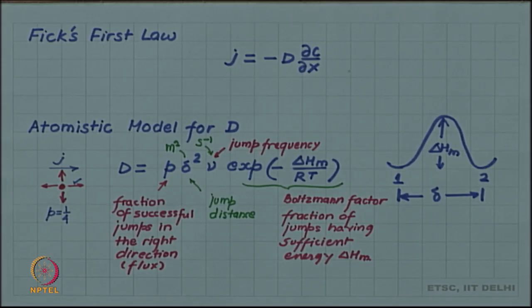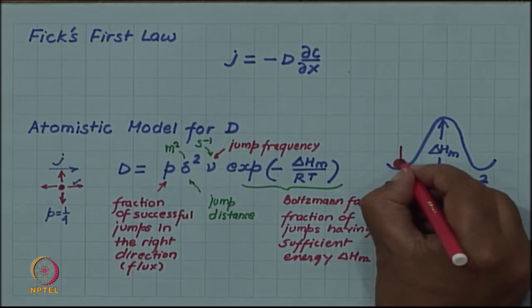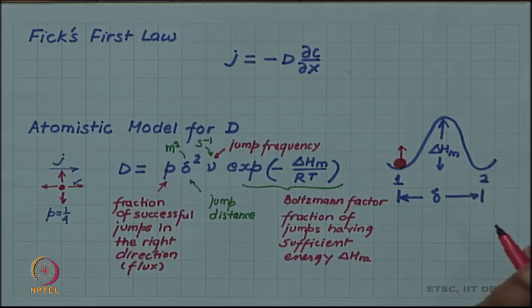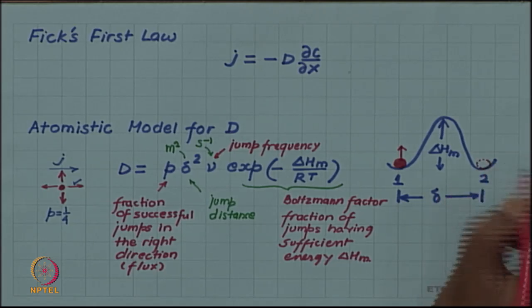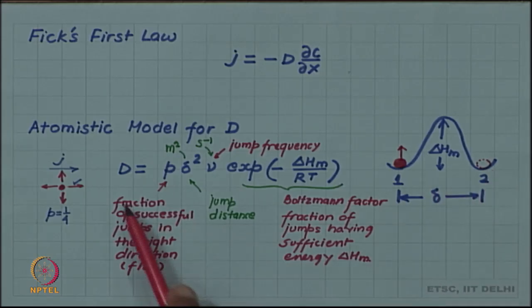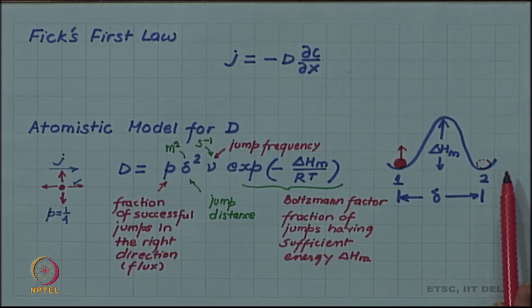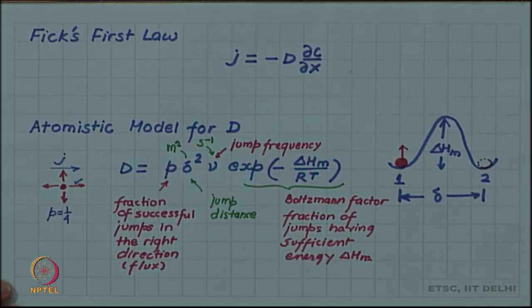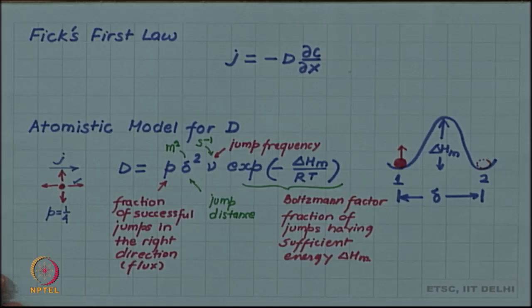In this model we tacitly assumed that when an atom wants to jump, the neighboring site is vacant. Many times the atom will not have sufficient energy to cross the barrier, but when it does, it will come to site 2 — and we are assuming site 2 is vacant. If site 2 is already occupied, even if the atom has sufficient energy it will not be able to make this move. So in this model we have tacitly assumed that the next site is vacant, and this assumption is more or less true for interstitial diffusion.